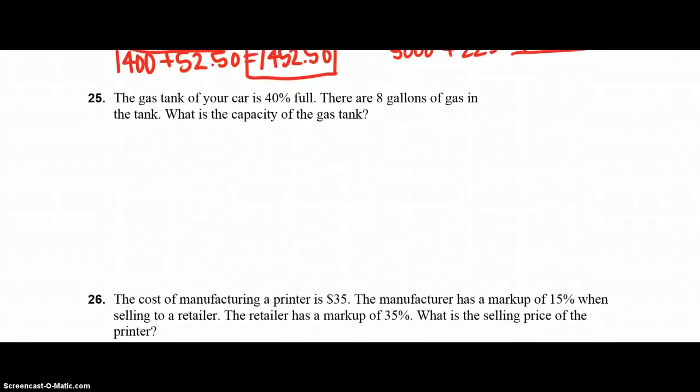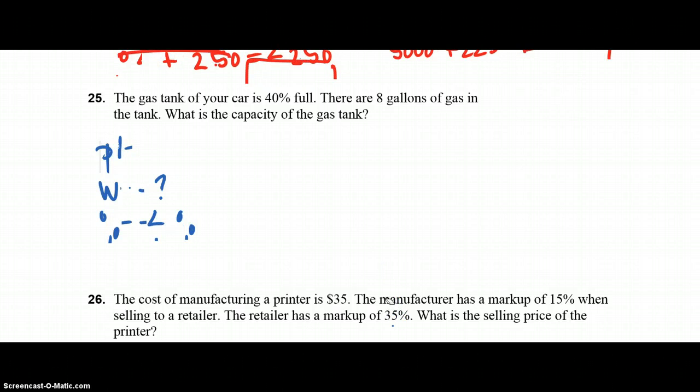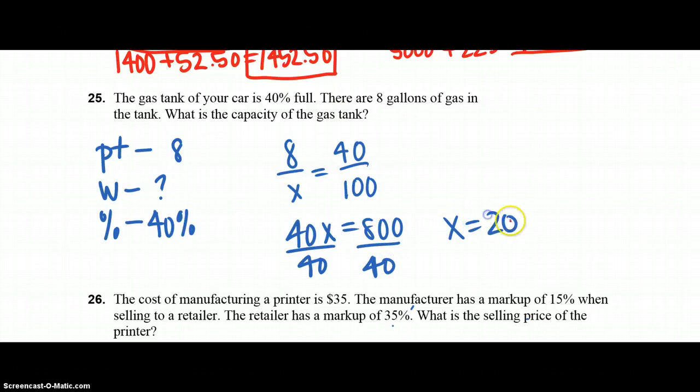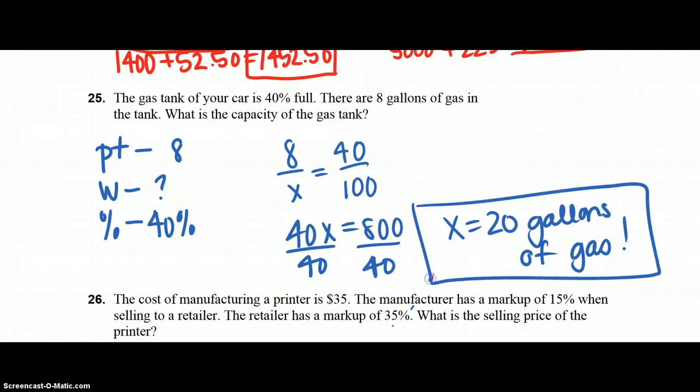Last question, and I have one minute to do it before my video cuts me off. So the gas tank of your car is 40% full. There are 8 gallons of gas in the tank. What is the capacity? My suggestion to you would be part, whole, and percent. So the percent is 40% full. The whole, I'm trying to find that. I don't know because that's what I'm trying to figure out, the capacity of the gas tank. And the part is 8 because there's 8 gallons in there now. So part over whole equals percent over 100. 40x equals 800. Divide both sides by 40. And the tank holds 20 gallons of gas. And I made it with 28 seconds to spare. You were crossing off 26 and crossing off 27. If you have any other questions, please don't hesitate to email me. And good luck on your test.